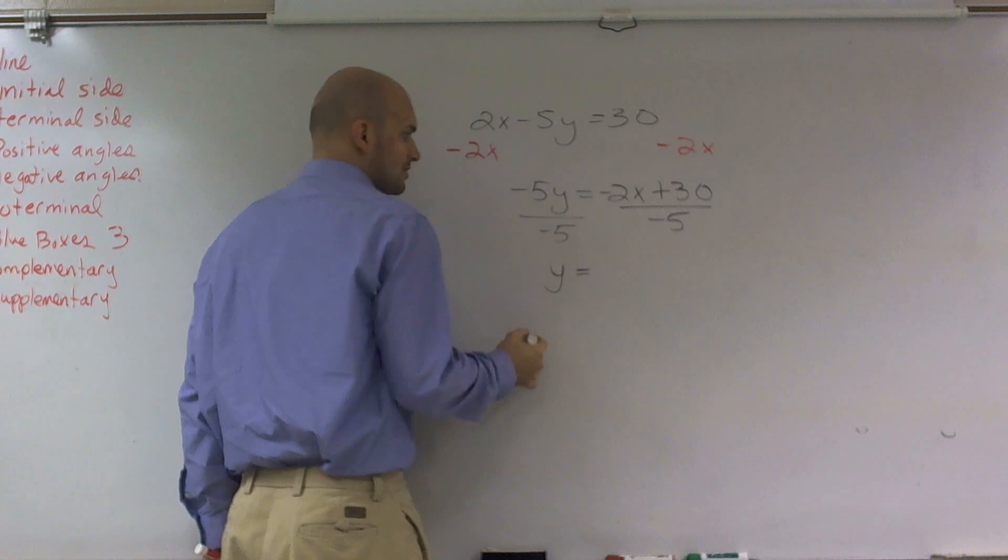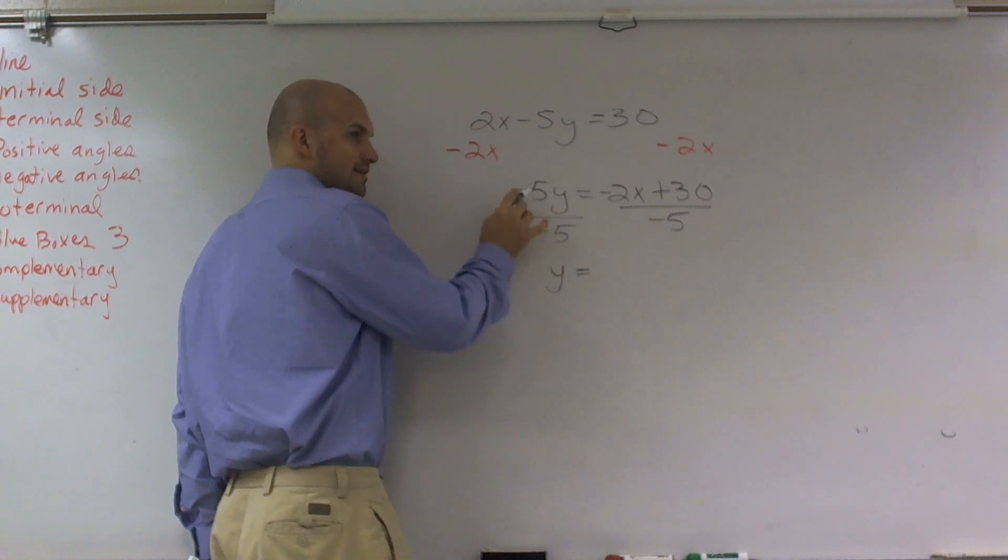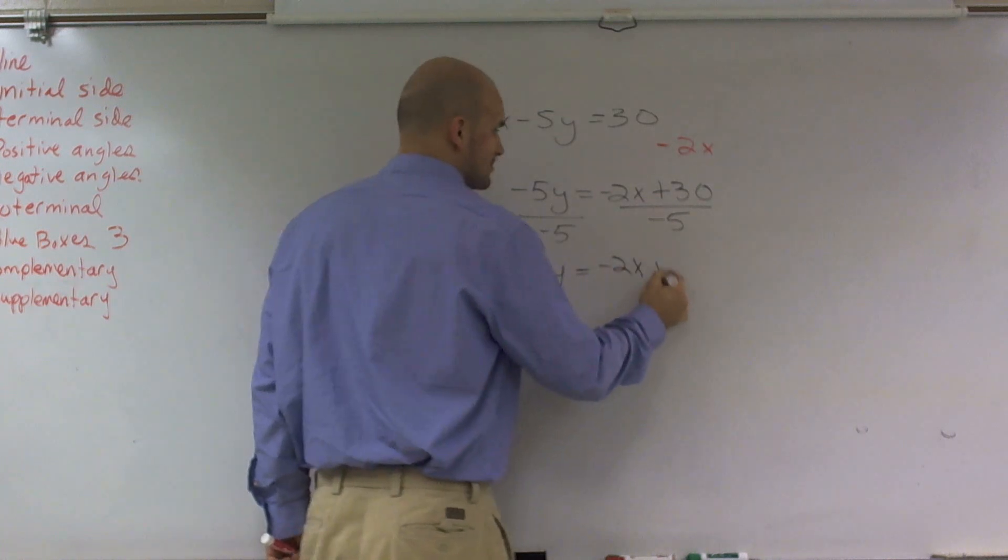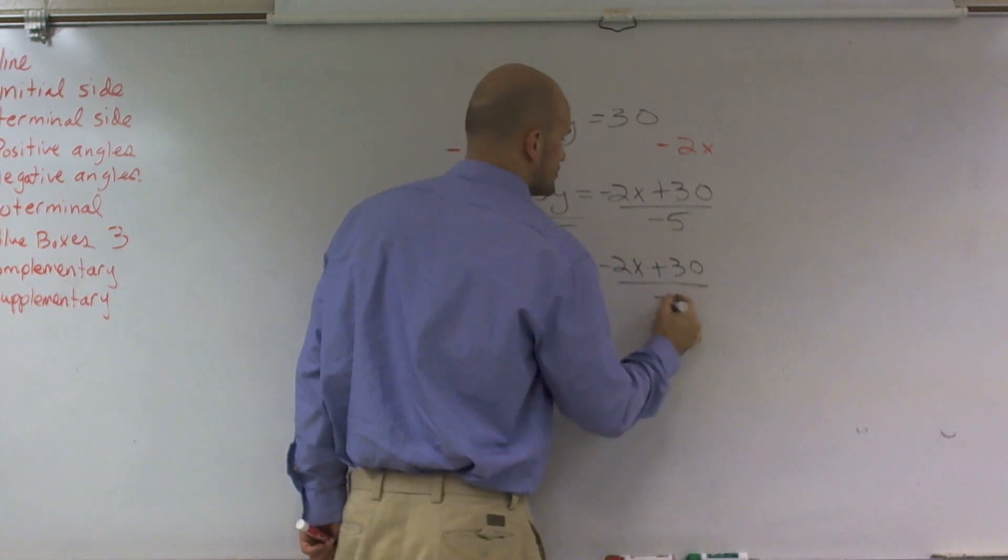But now I'm going to divide by negative 5. Therefore, I'm left with y equals. And I divide it by negative to get rid of the negative, negative, and the 5. Therefore, I'm left with negative 2x plus 30 divided by negative 5.